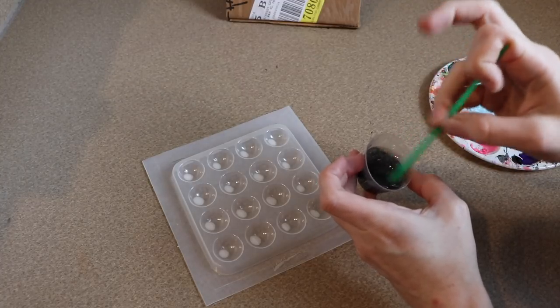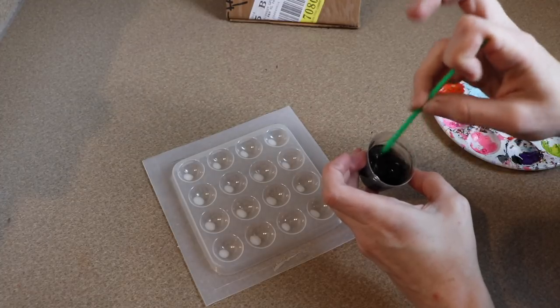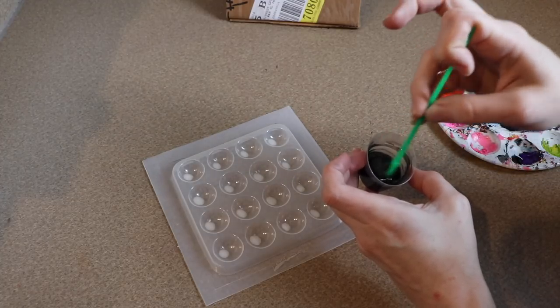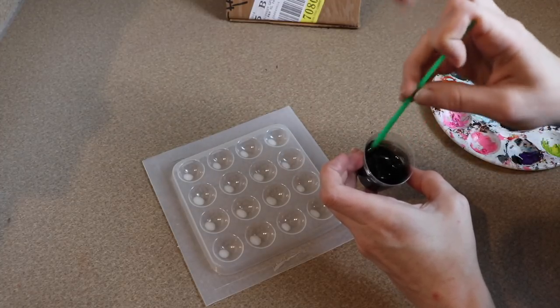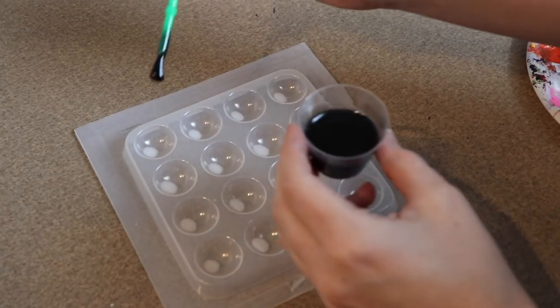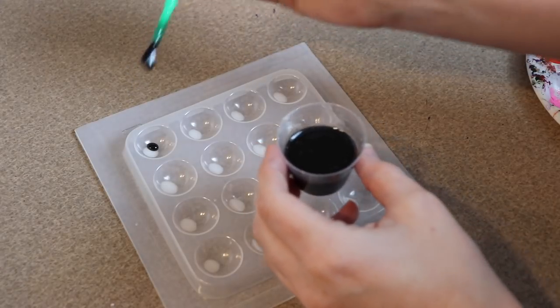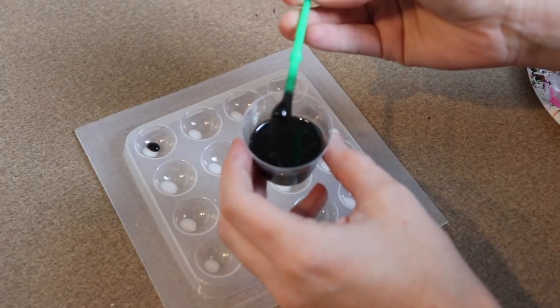Okay, so after our white spots have dried, we're going to lay our mold completely flat now. Now we're going to be pouring the resin for the pupil. I've mixed a little bit of black in my resin this time and I've made a lot more of it. We're going to start pouring this in.